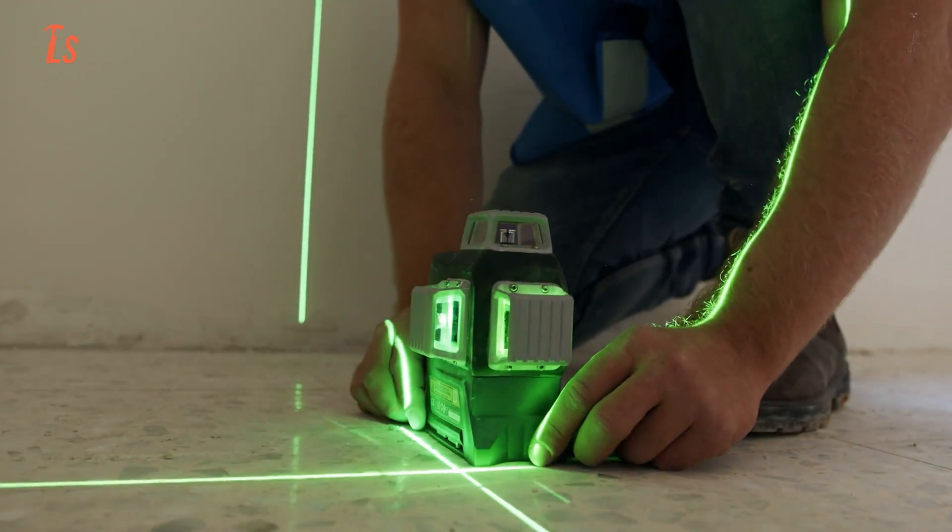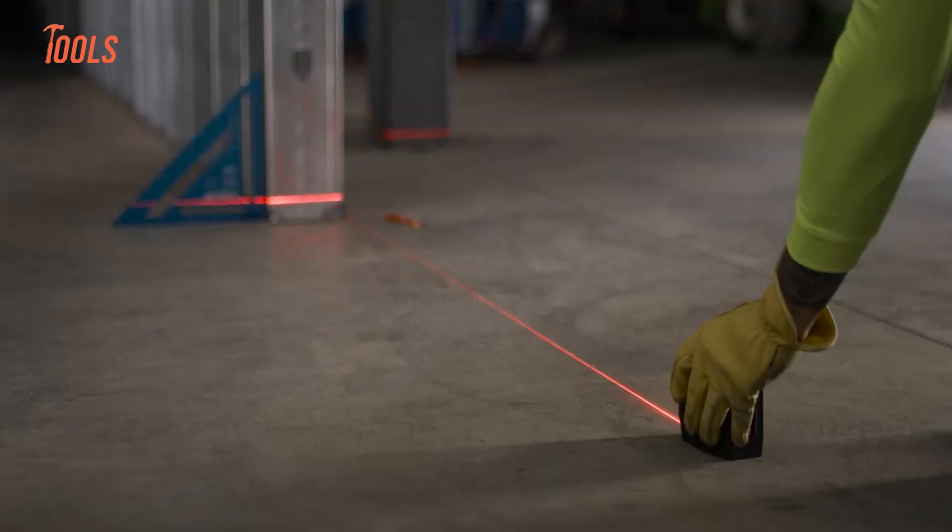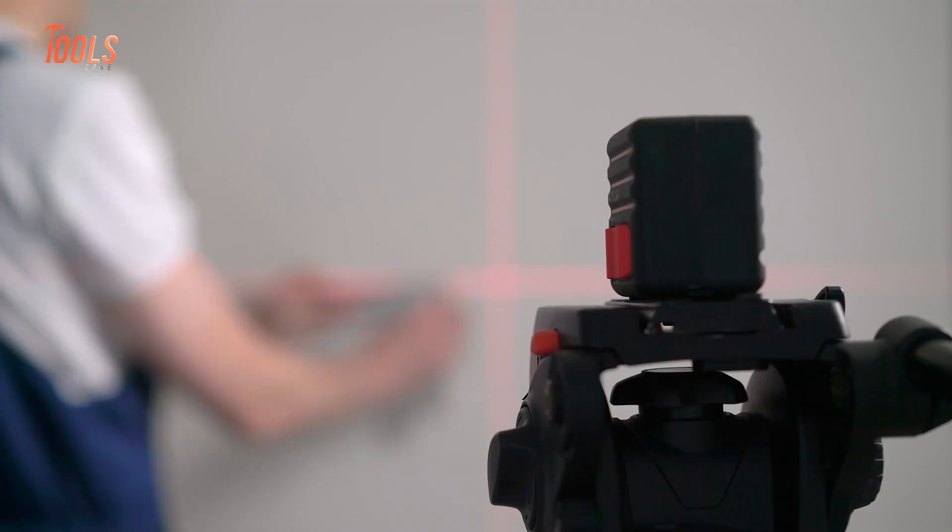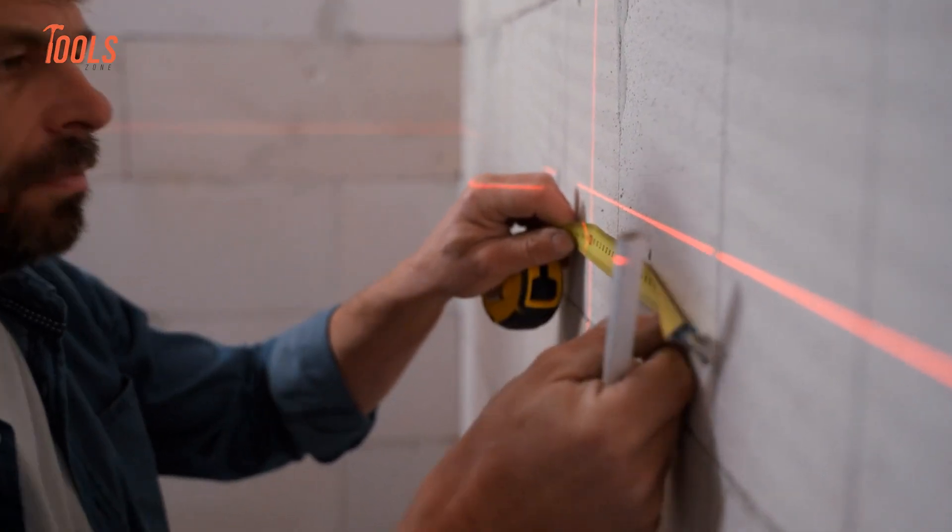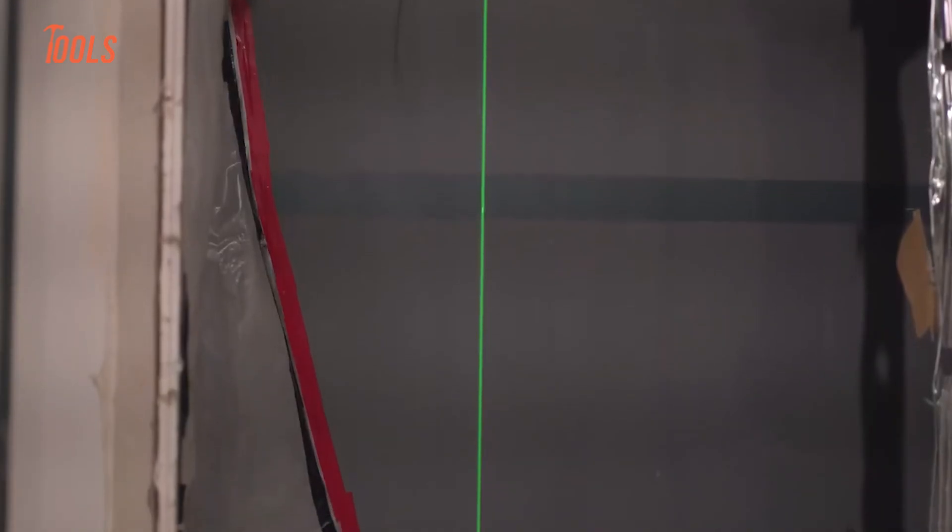Another key factor is the working range. Budget models can usually project a visible line up to around 10 to 15 meters, which is fine for small rooms. But when you step into larger spaces or outdoor projects, that's not enough.